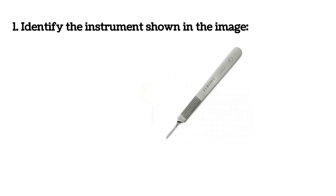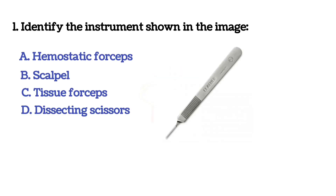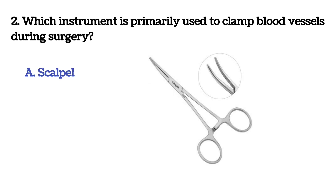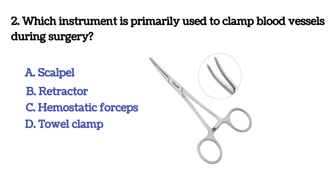The first question: identify the instrument shown in the image. Option A: hemostatic forceps. Option B: scalpel. Option C: tissue forceps. Option D: dissecting scissors. The correct answer is option B, scalpel.